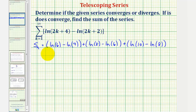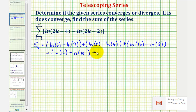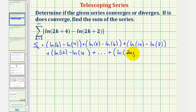Let's go ahead and continue. When k is four, we'd have natural log of (2·4+4), that's natural log twelve, minus natural log of (2·4+2), which is ten. The series would continue, but notice how the last term would be when k is equal to n, which would be natural log (2n+4) minus natural log (2n+2).